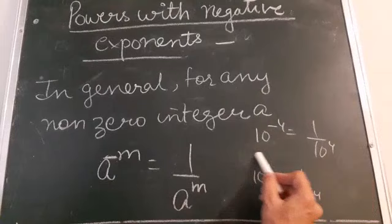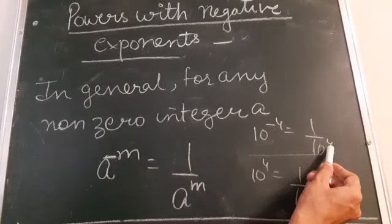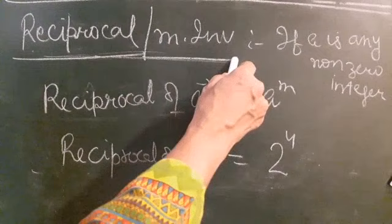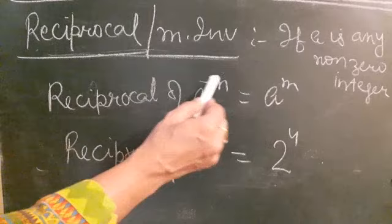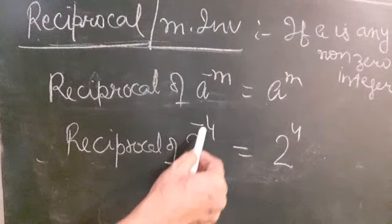When a positive power comes in the denominator, make it negative by taking it to the denominator. Conversely, when the negative power comes to the numerator, the sign changes to positive. Now, what is the reciprocal or multiplicative inverse? For any non-zero integer a, the reciprocal of a raised to power minus m is a raised to power m. For example, the reciprocal of 2 raised to power minus 4 is 2 raised to power 4.